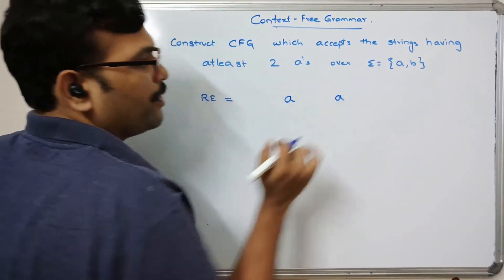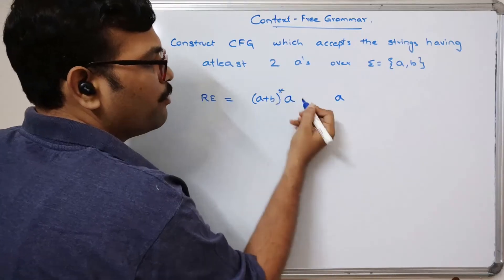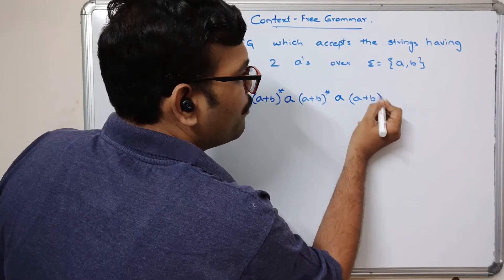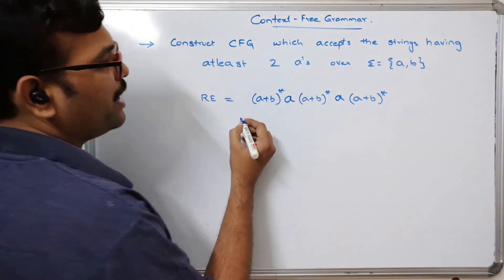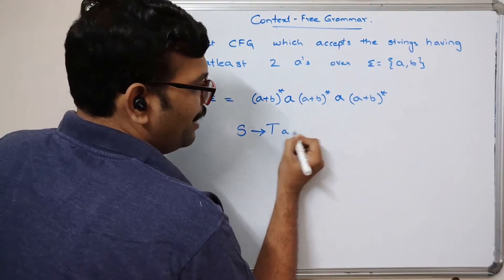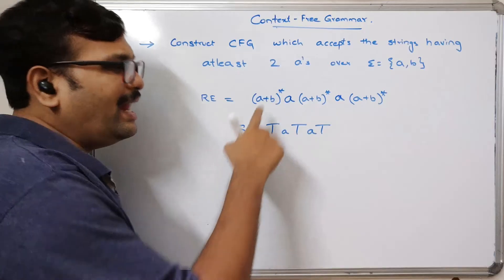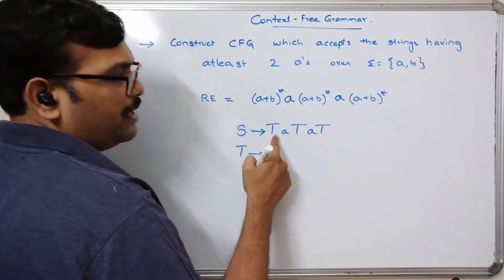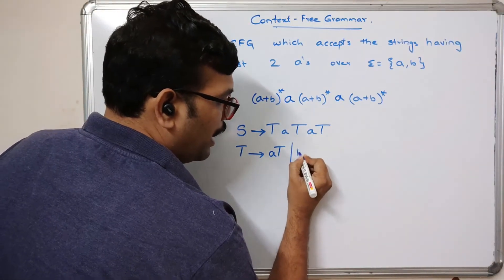The strings must have at least 2 a's anywhere. So we write: it can start with a or b, then any number of a's and b's, then one 'a', then any number of a's and b's, then another 'a', then any number of a's and b's. We take one non-terminal S and another non-terminal T, writing S tends to T A T A T, where T can be any number of a's or b's.